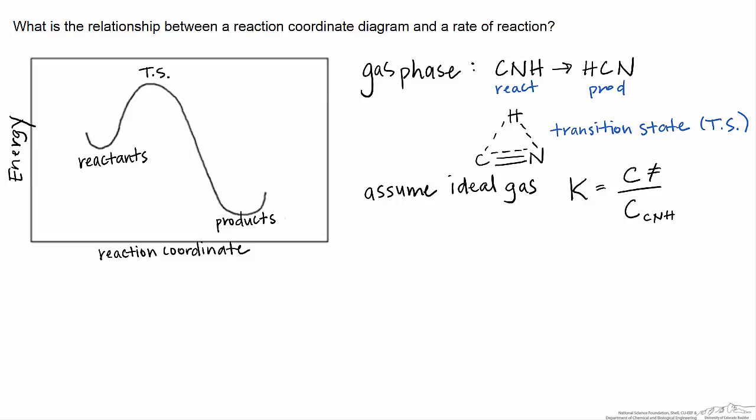The central idea behind transition state theory is that we can determine the concentration, the density of molecules in a given vessel volume that are in the transition state, by assuming an equilibrium relationship with the concentration of reactant molecules, which is much easier to measure.